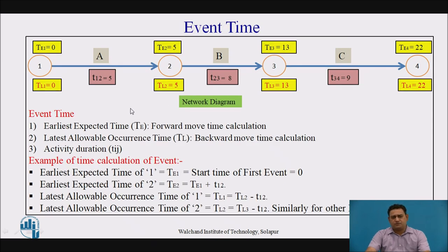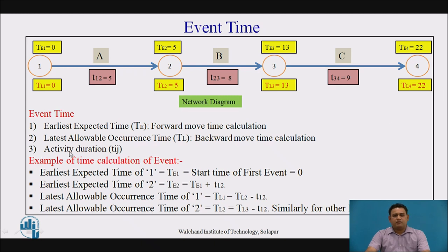The event times: the yellow color boxes represent the event times. The first is the earliest expected time TE, calculated by moving forward from left to right. The latest allowable occurrence time TL is mentioned below the nodes and is calculated by moving from right to left.